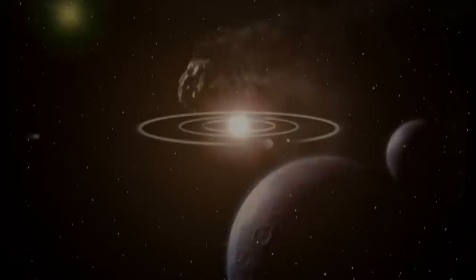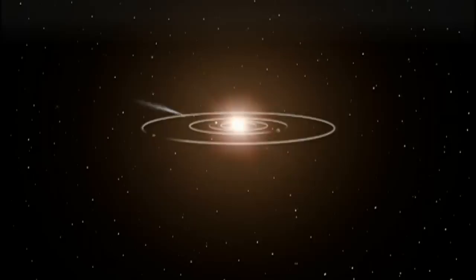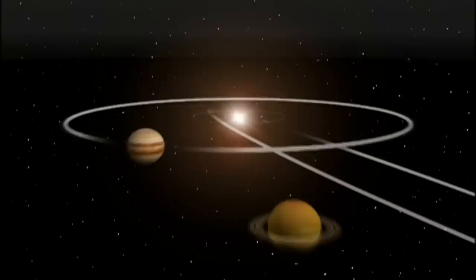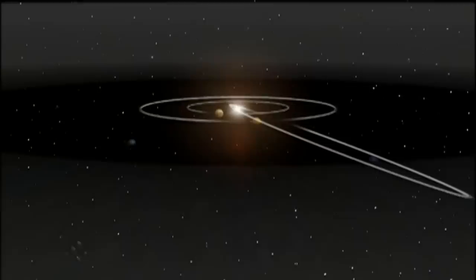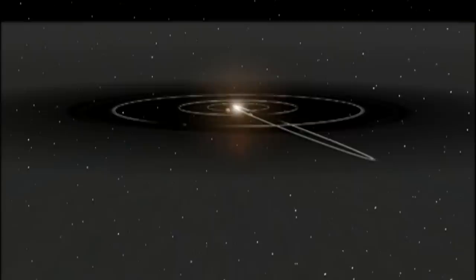Halley a eu de la chance. L'attraction solaire la fait tourner autour du soleil au lieu de la faire chuter directement dedans. Mais Halley est maintenant prisonnière d'une orbite qui l'emmène au-delà de Neptune pour revenir vers le soleil puis repartir en direction de Neptune et ainsi de suite. Halley parcourt son orbite en 76 ans.